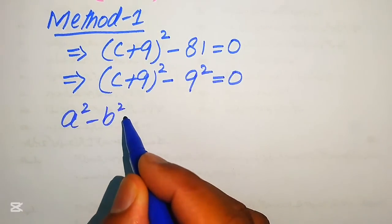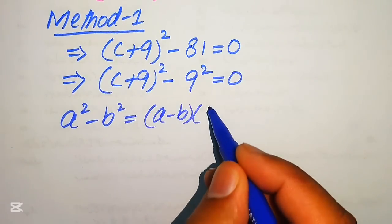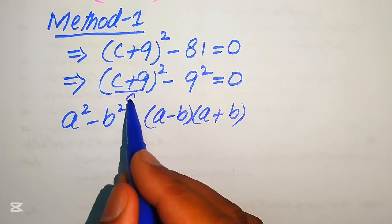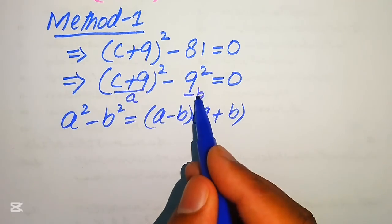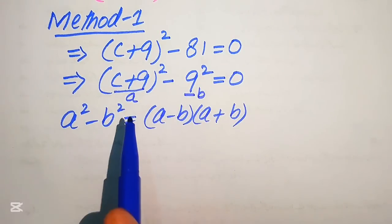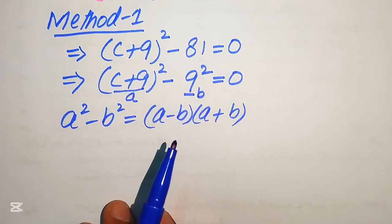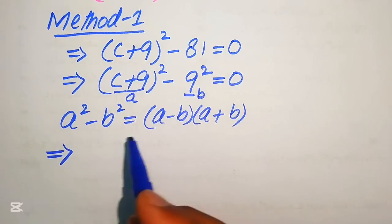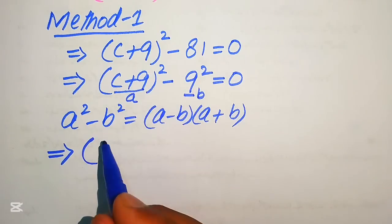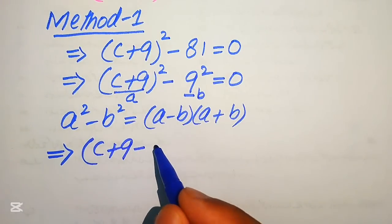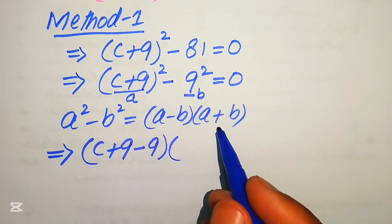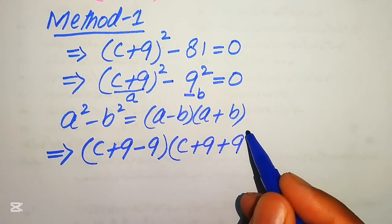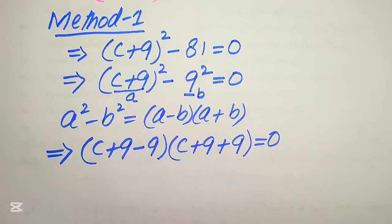Now we apply the algebraic formula: a² minus b² equals (a - b)(a + b). Here the value of a is (c + 9) and the value of b is 9. Substituting these values, the equation becomes (c + 9 - 9)(c + 9 + 9) equals 0.